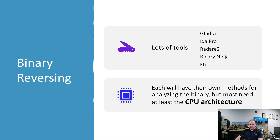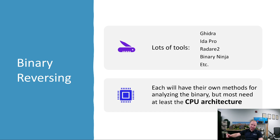A real benefit of Ghidra is collaboration. IDA Pro doesn't allow multiple people to work on the same image easily — you save a file, hand it off manually, very tedious. Ghidra effectively works like version control: you check in changes, it merges things, diffs them, pops up conflicts, making it a really cool way for multiple people to work on a project and share results.